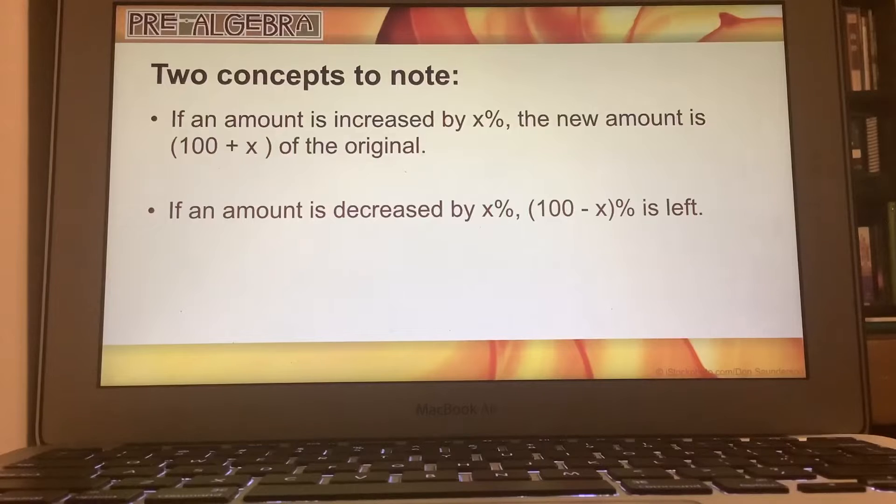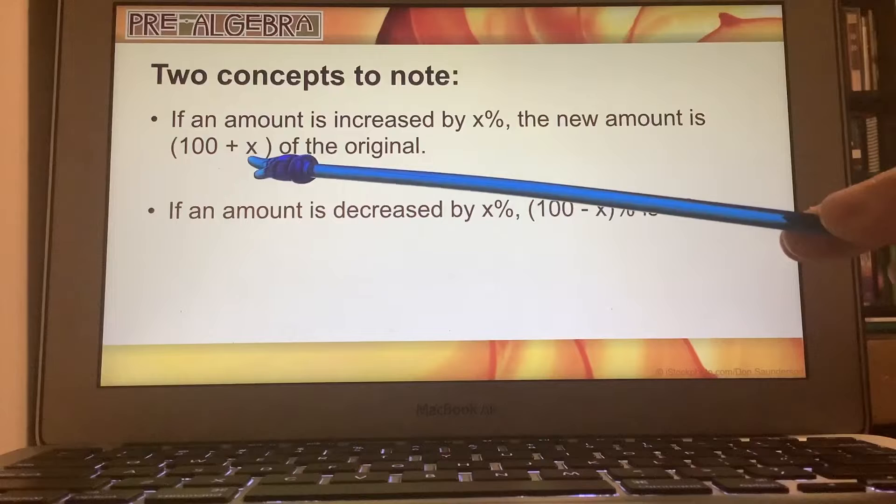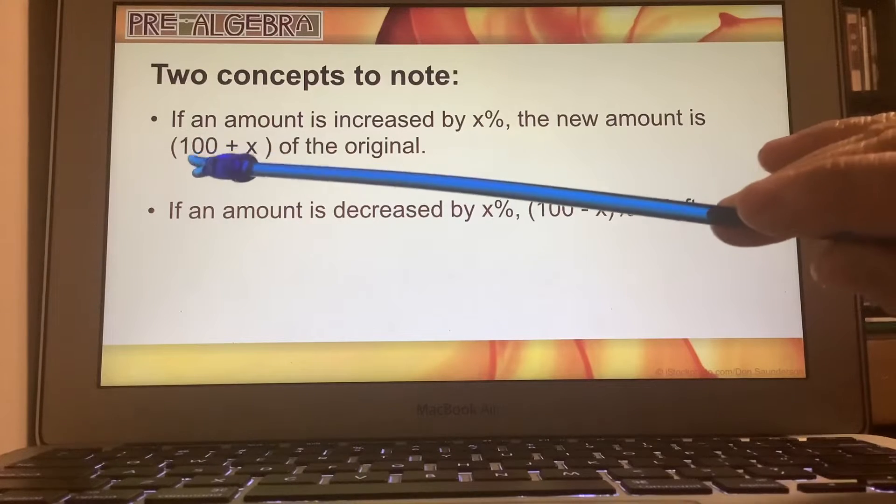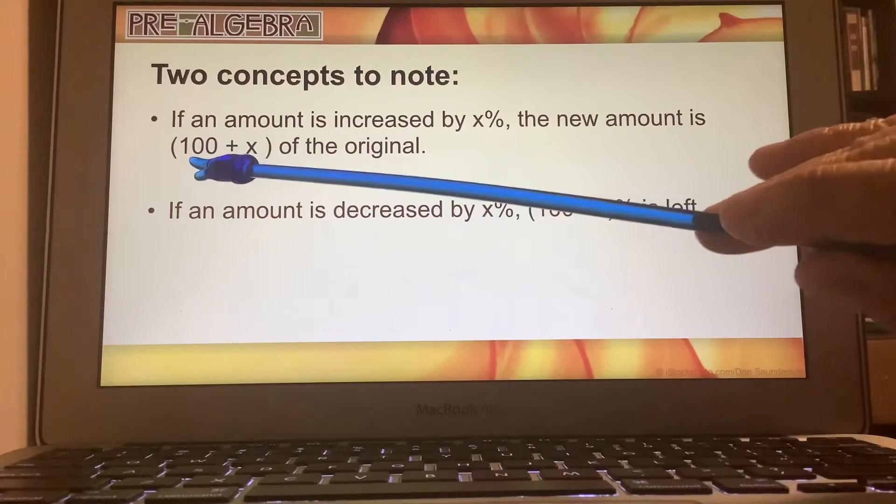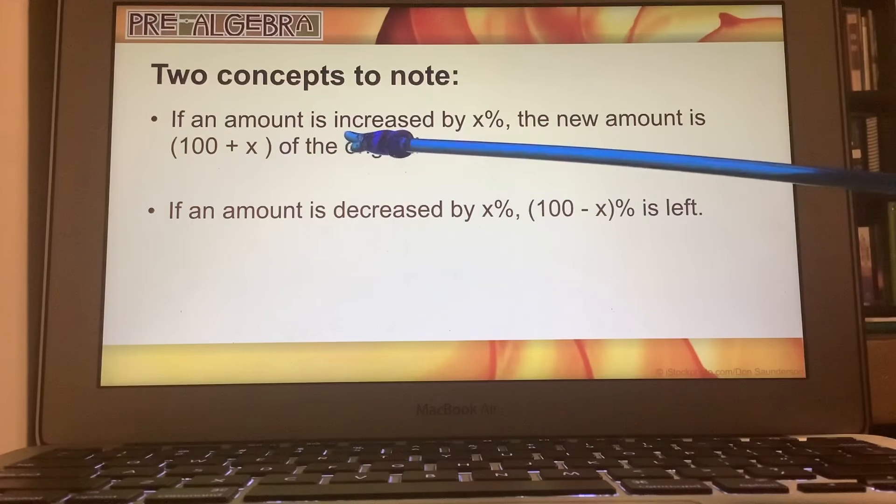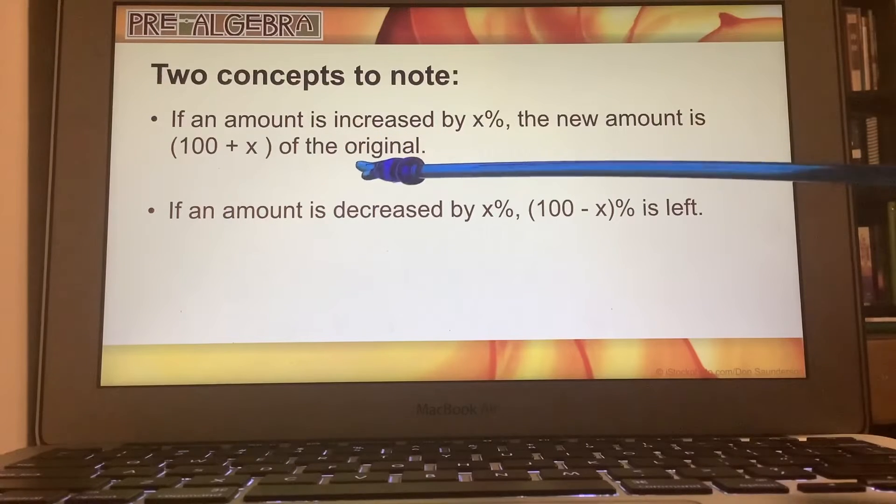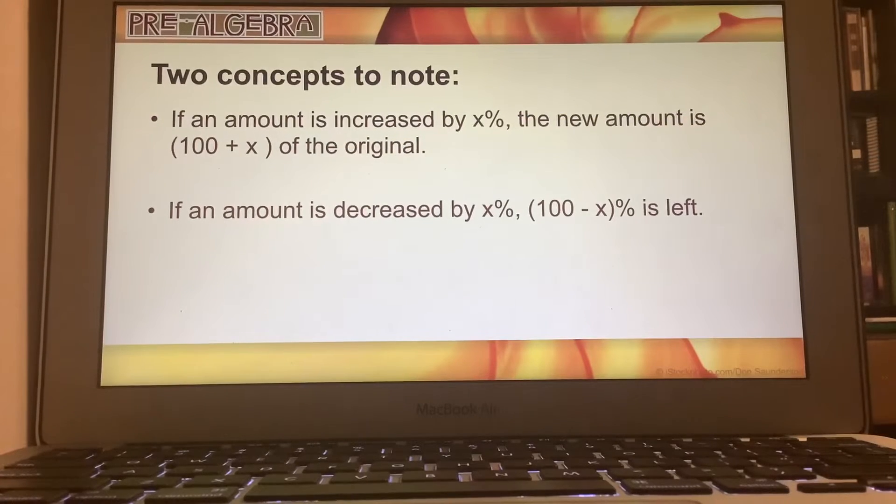So we'll use that later on. But when we say we have a certain percent increase, that increase is x, and you have to add it to 100. So 100 plus x is the percent increase, and then that's going to be multiplied by the original amount.